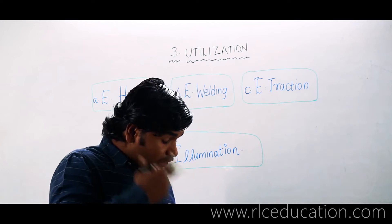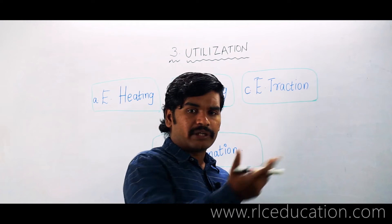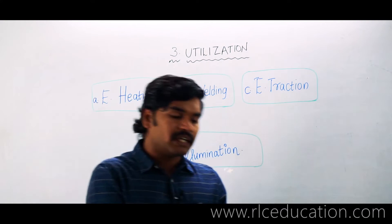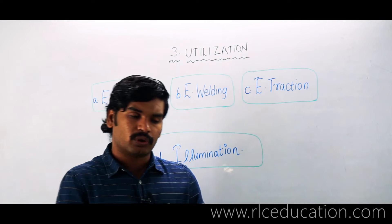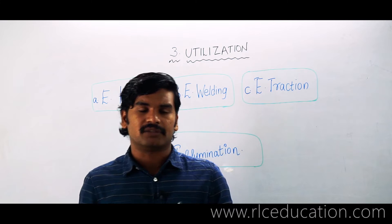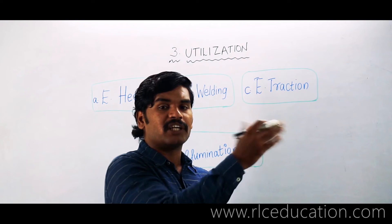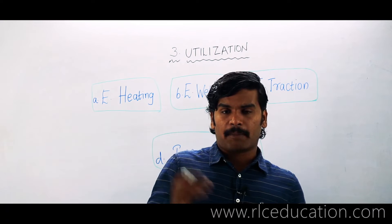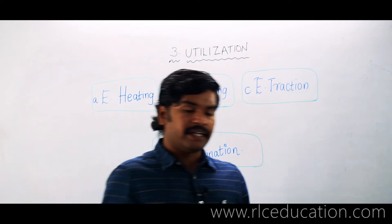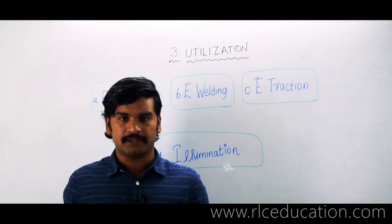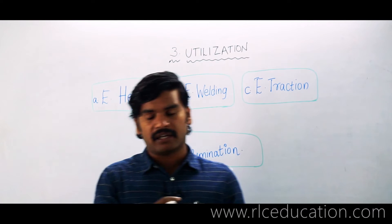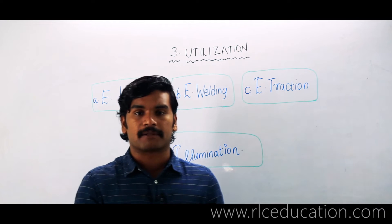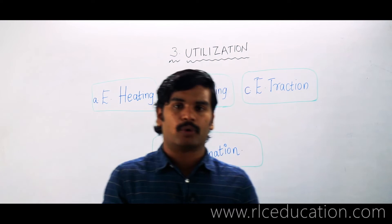Electrical energy is not directly available in the universe; it must be converted from readily available resources. We use a device called a generator to convert mechanical energy into electrical energy. Whatever energy resource is available, it is first converted into mechanical form, fed to a generator, and converted into electrical energy. About 90% of the total electricity generated in the world comes from conversion of mechanical energy to electrical energy, and about 70% of that generated electrical energy is converted back from electrical to mechanical — that means motoring loads.